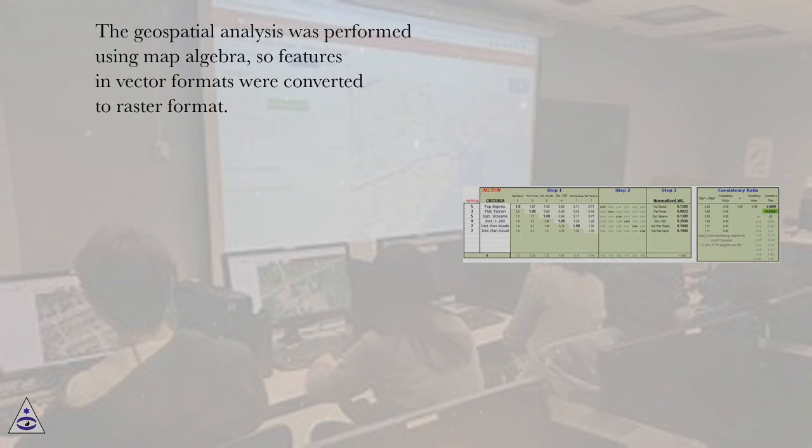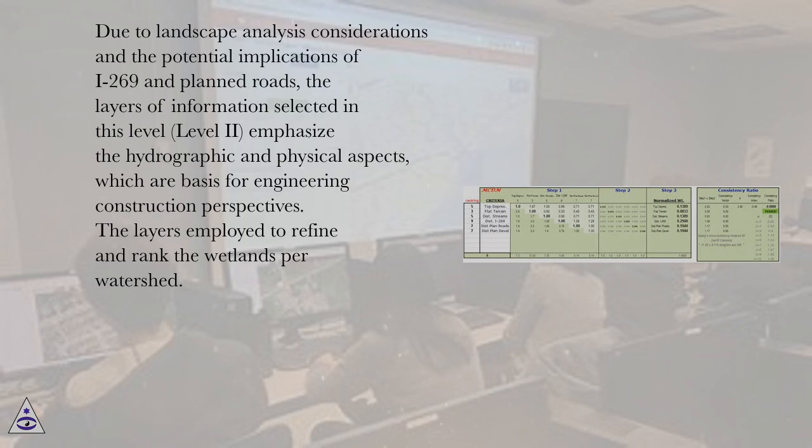The geospatial analysis was performed using map algebra, so features in vector formats were converted to raster format. Due to landscape analysis considerations and the potential implications of I-269 and planned roads, the layers of information selected in this Level 2 emphasize the hydrographic and physical aspects, which are the basis for engineering construction perspectives. The layers employed to refine and rank the wetlands per watershed.